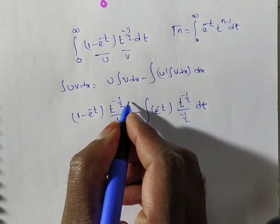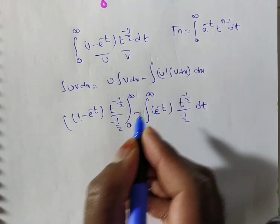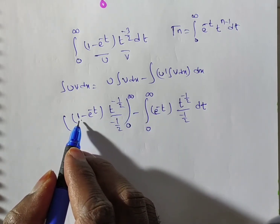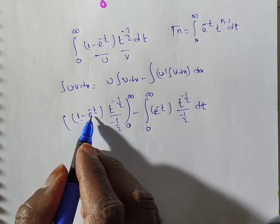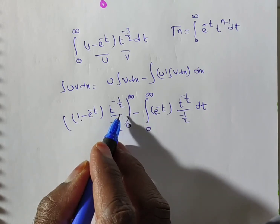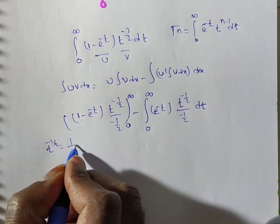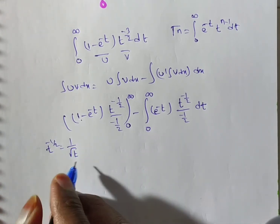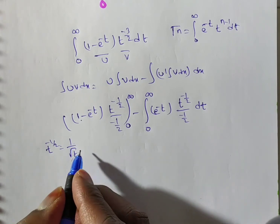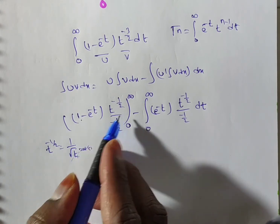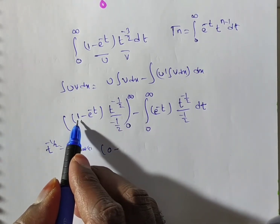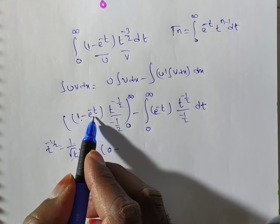The limits are from 0 to infinity for both terms. Substituting the upper limit: (1 minus e to the power minus infinity) equals 1 minus 0 equals 1, and t to the power minus 1 by 2 at t equals infinity means 1 over root t, which goes to 0. So the entire term is 0 at the upper limit. At the lower limit t equals 0: (1 minus e to the power 0) equals 1 minus 1 equals 0. So the boundary term is 0.